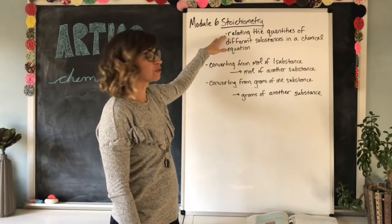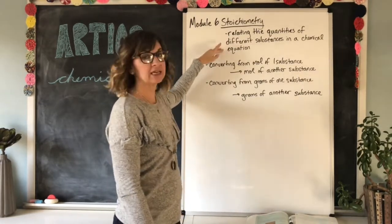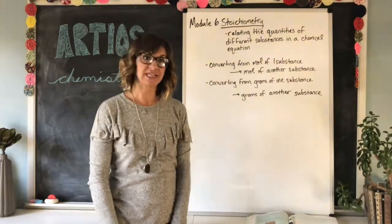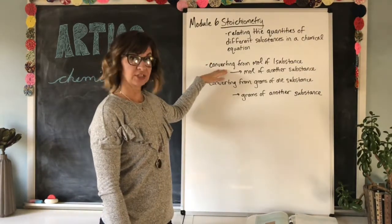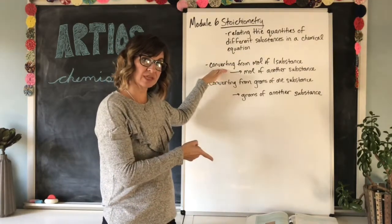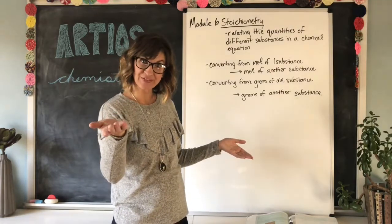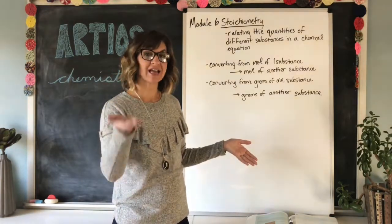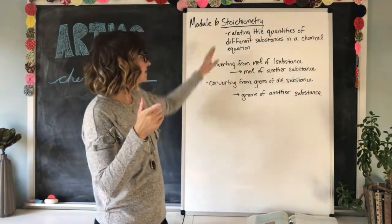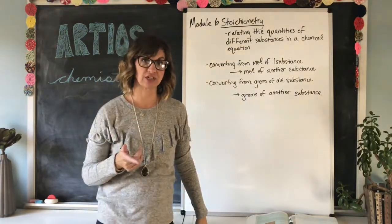Module six stoichiometry. Stoichiometry is relating the quantities of different substances in a chemical equation. For example, converting from moles of one substance to moles of another substance that are within the same chemical equation. Remember how we've done several of those examples? That is stoichiometry. The definition again, relating the quantities of different substances in a chemical equation.